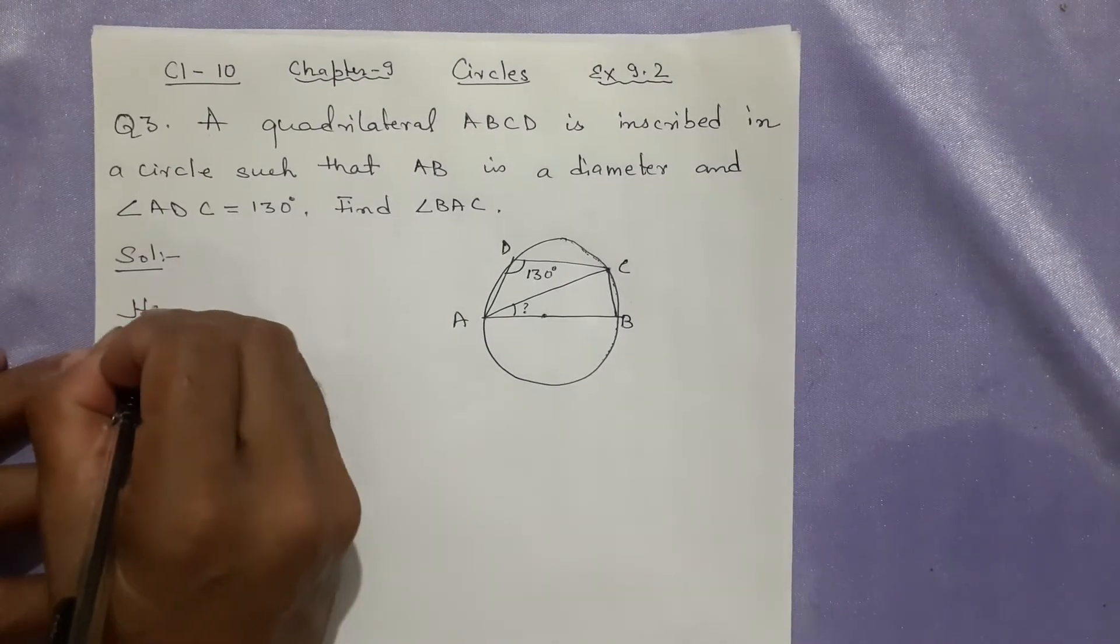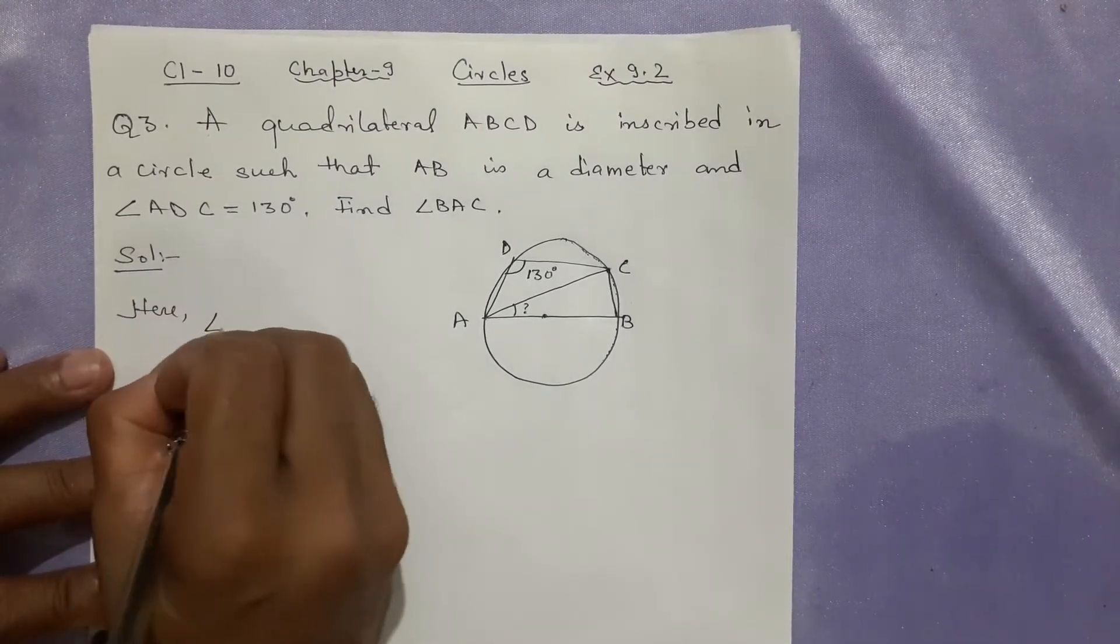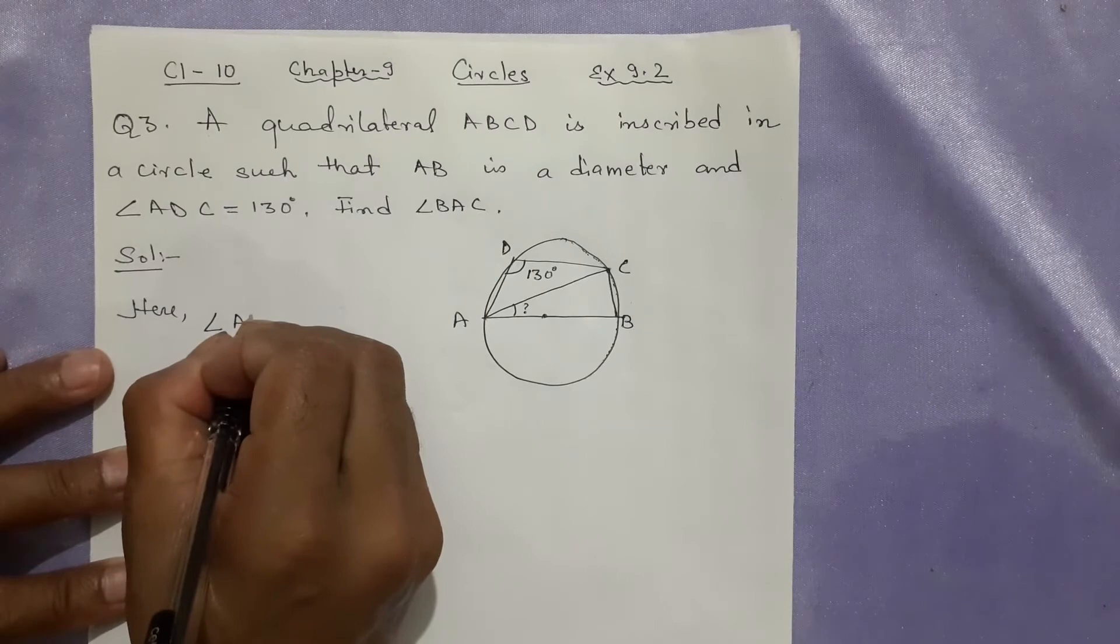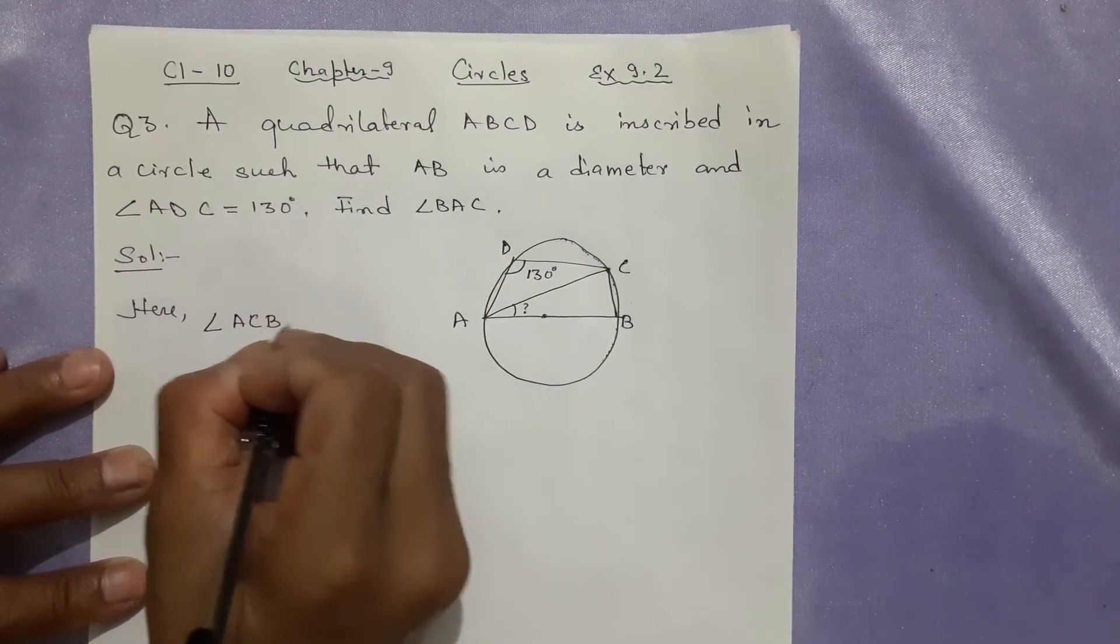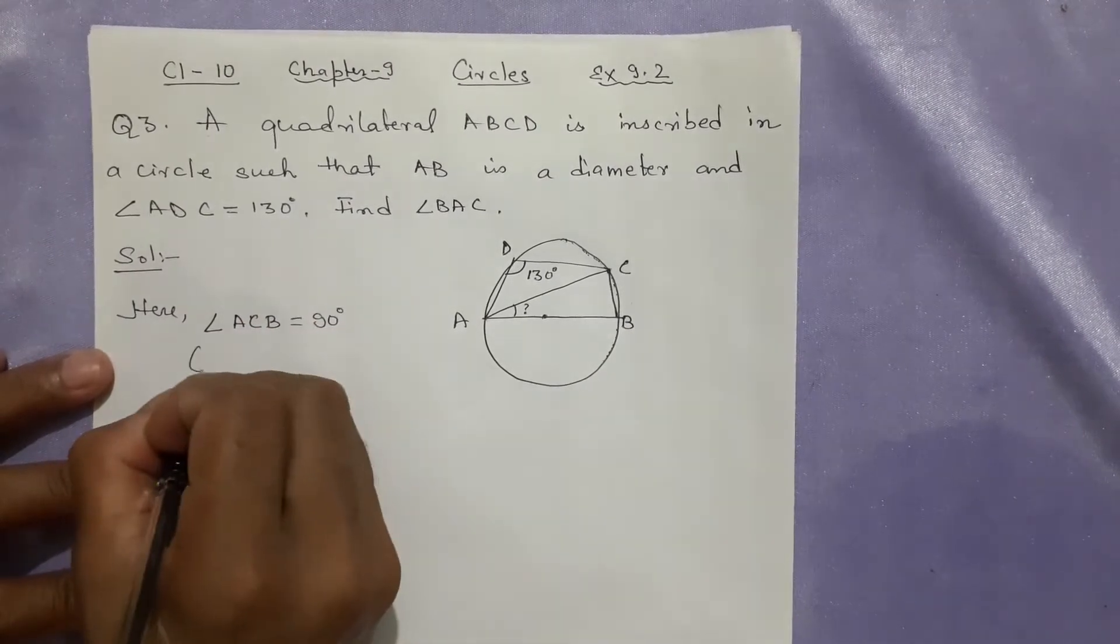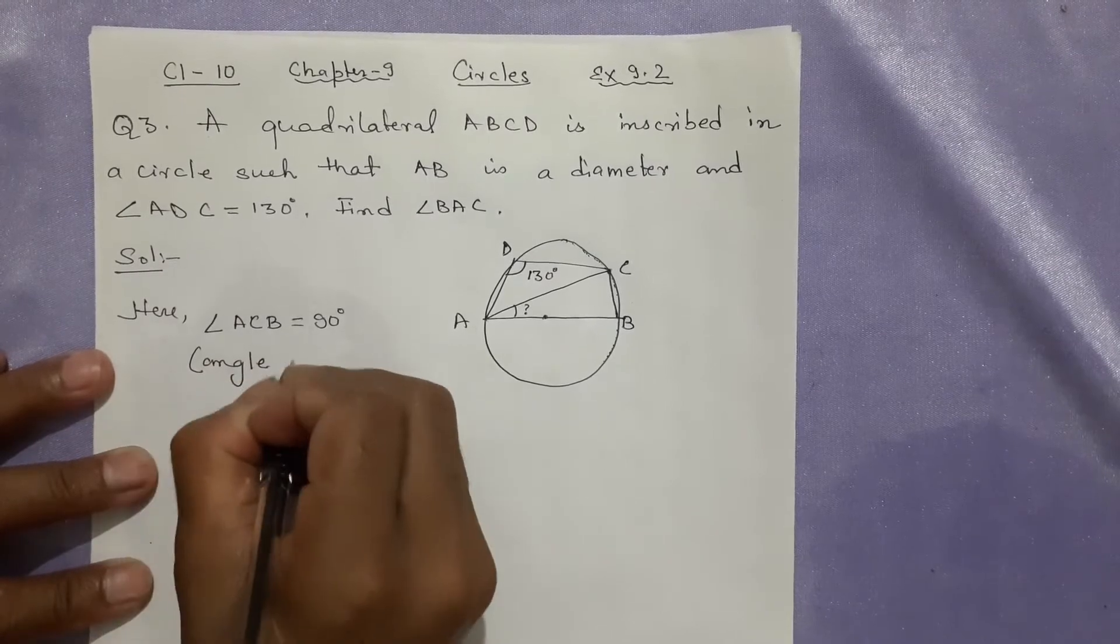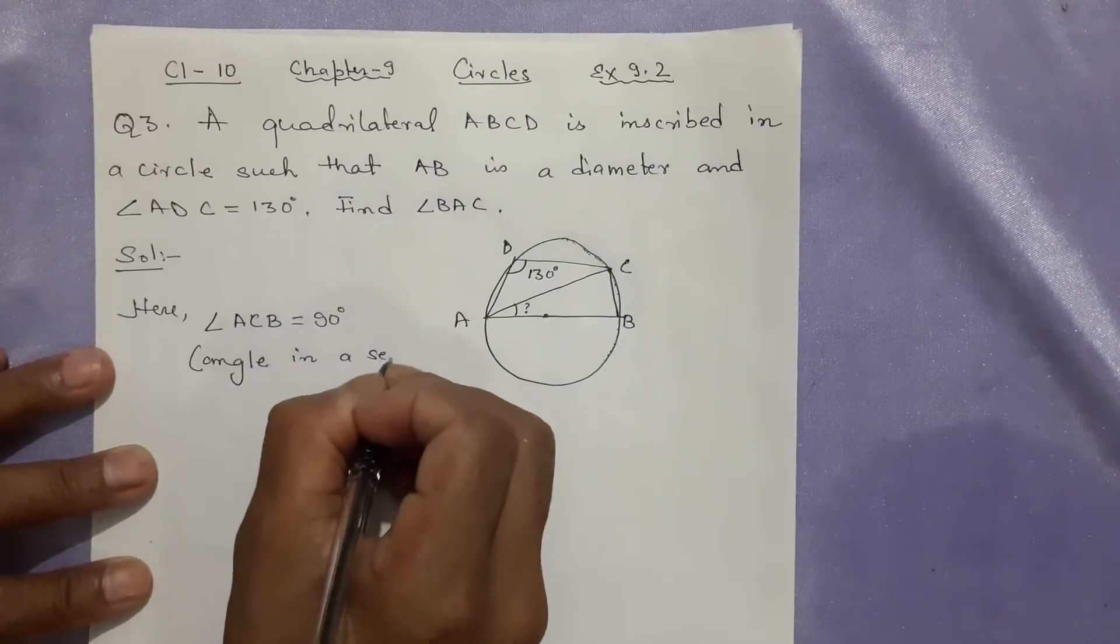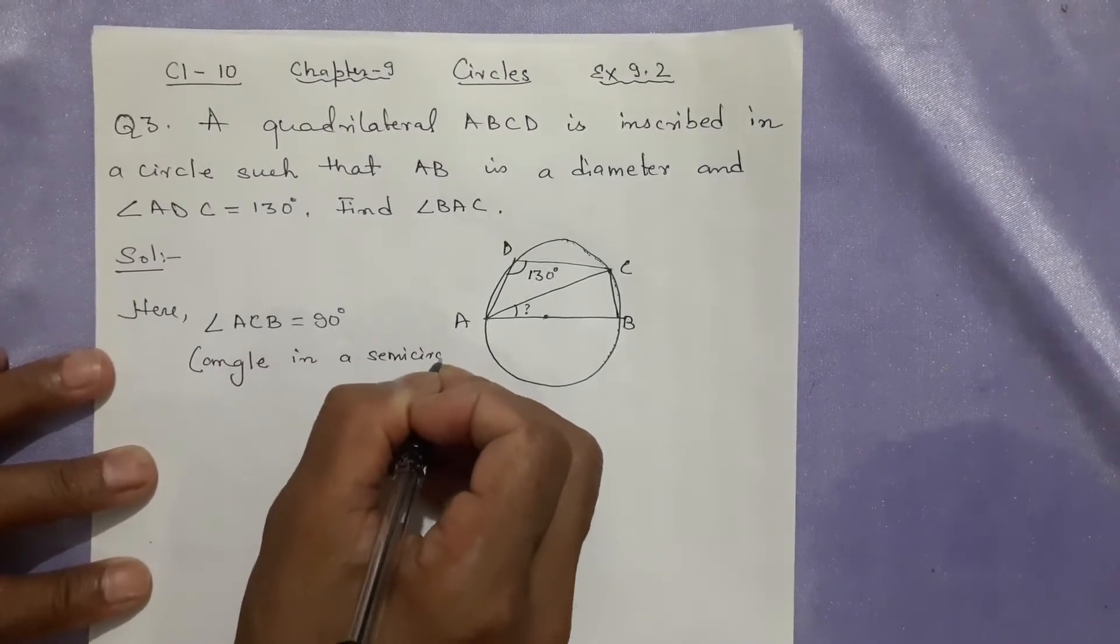Here, angle ACB = 90° because the angle in a semicircle is always 90°.